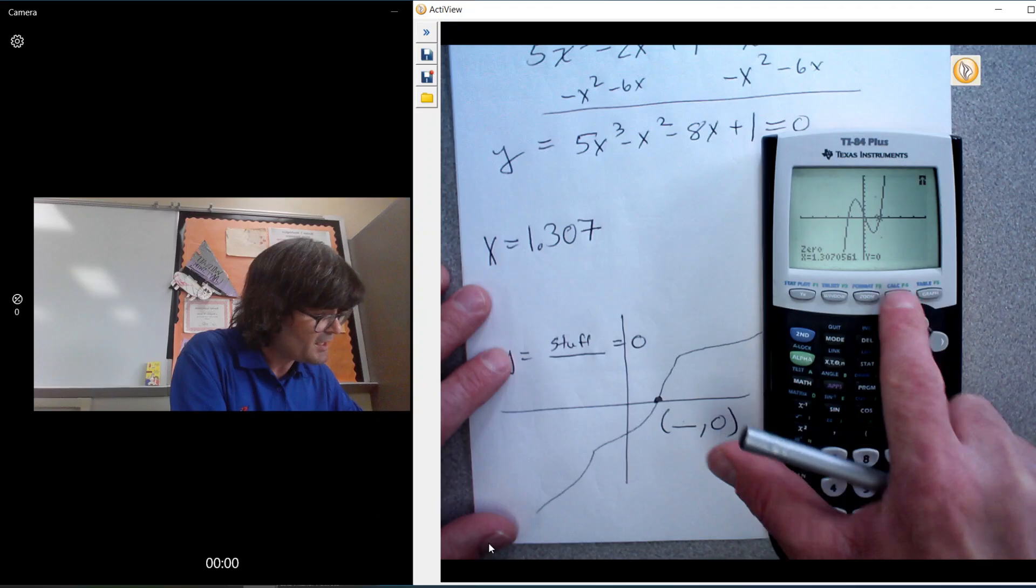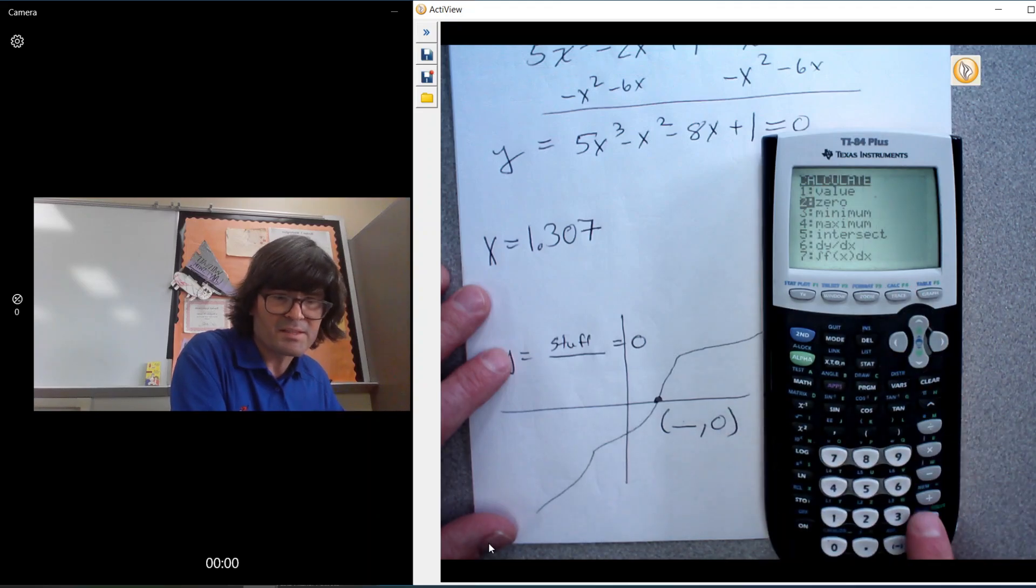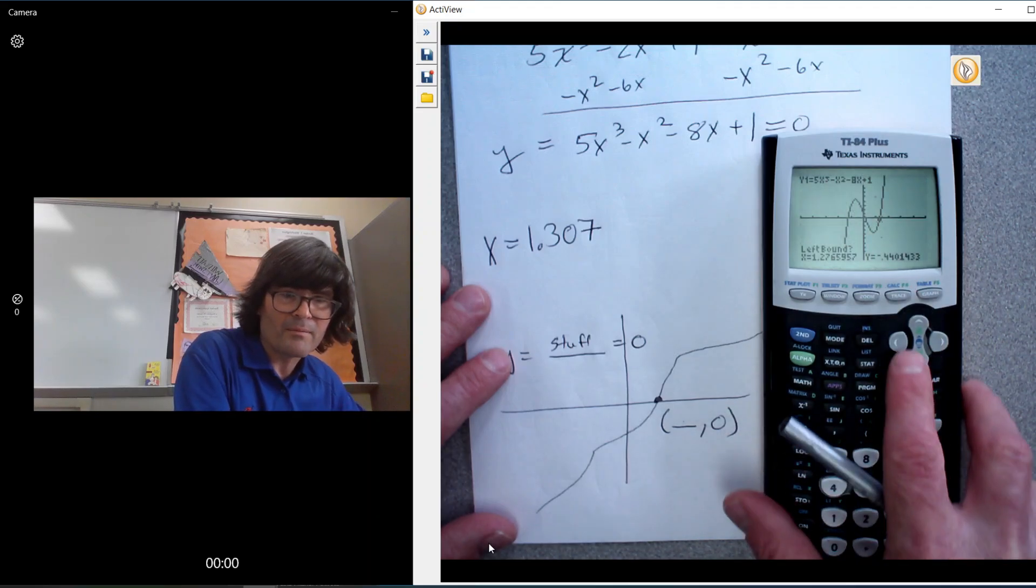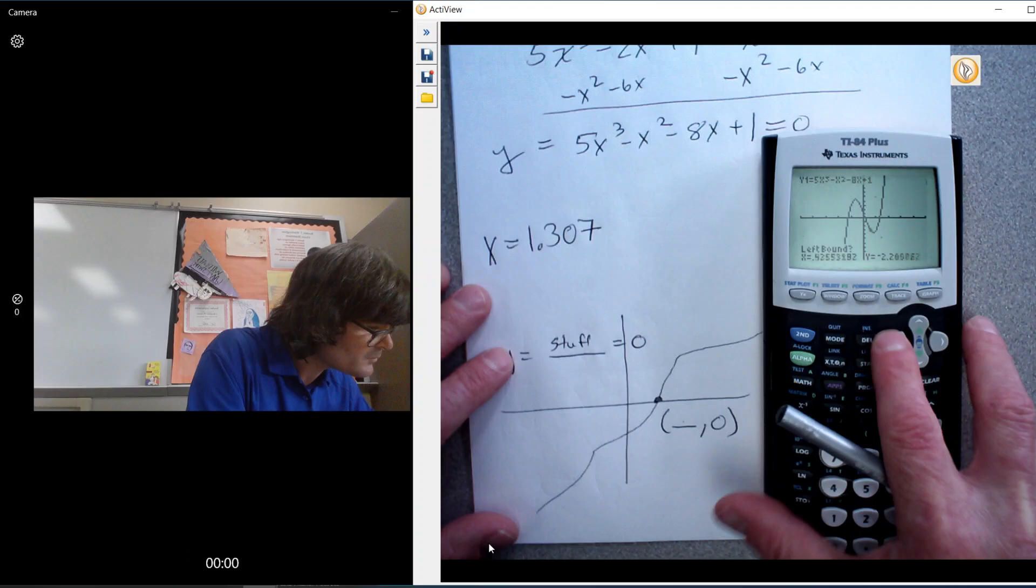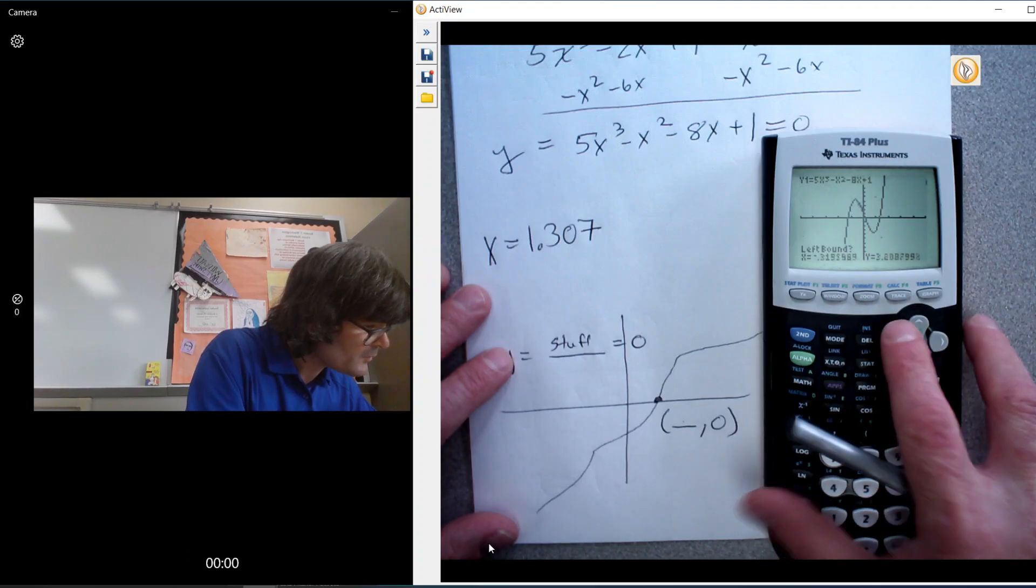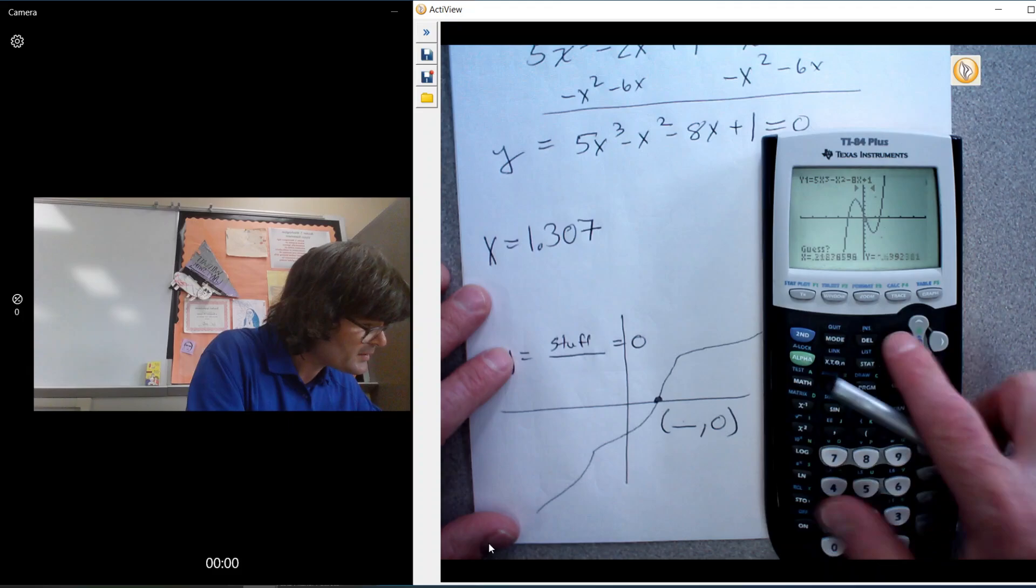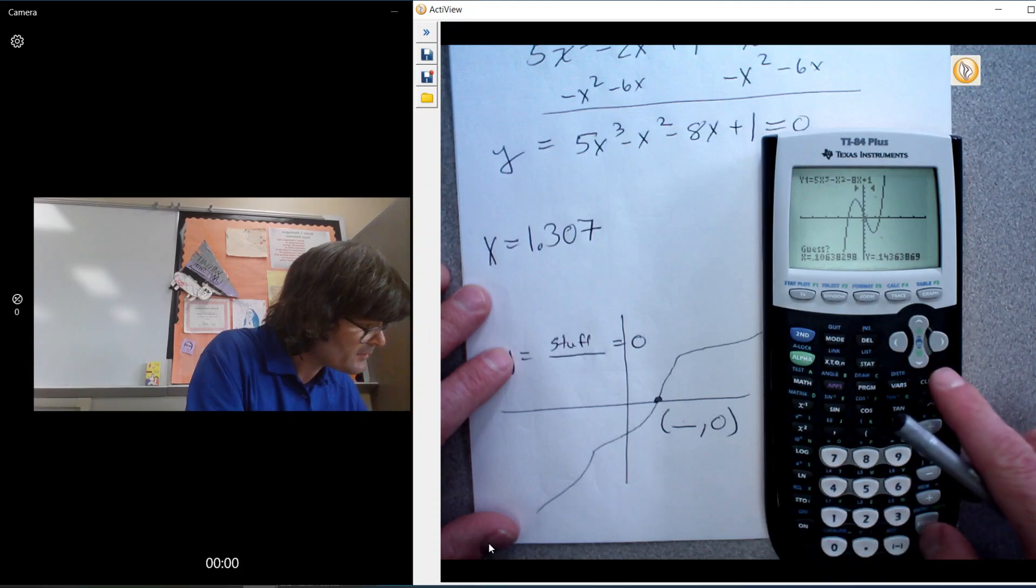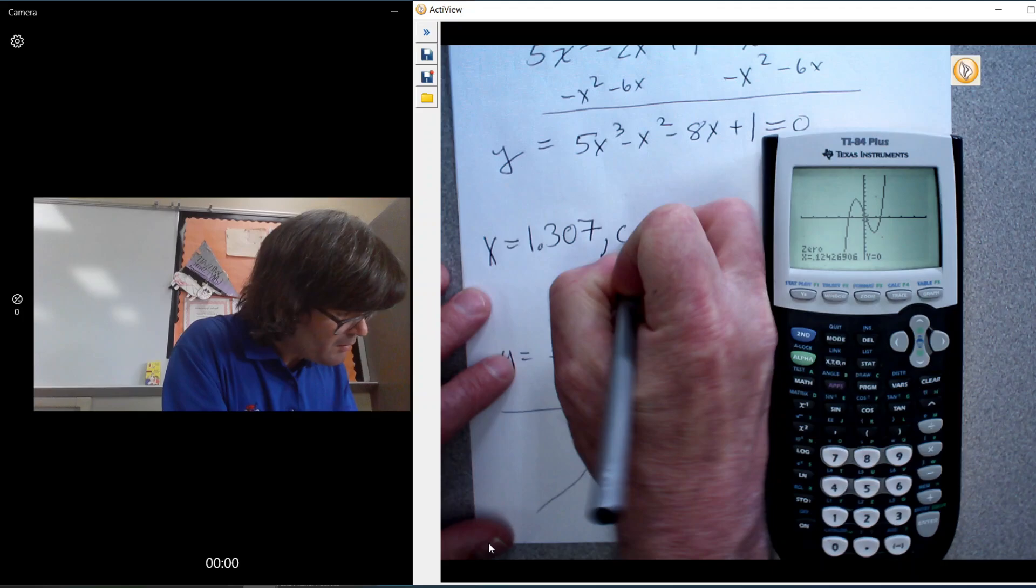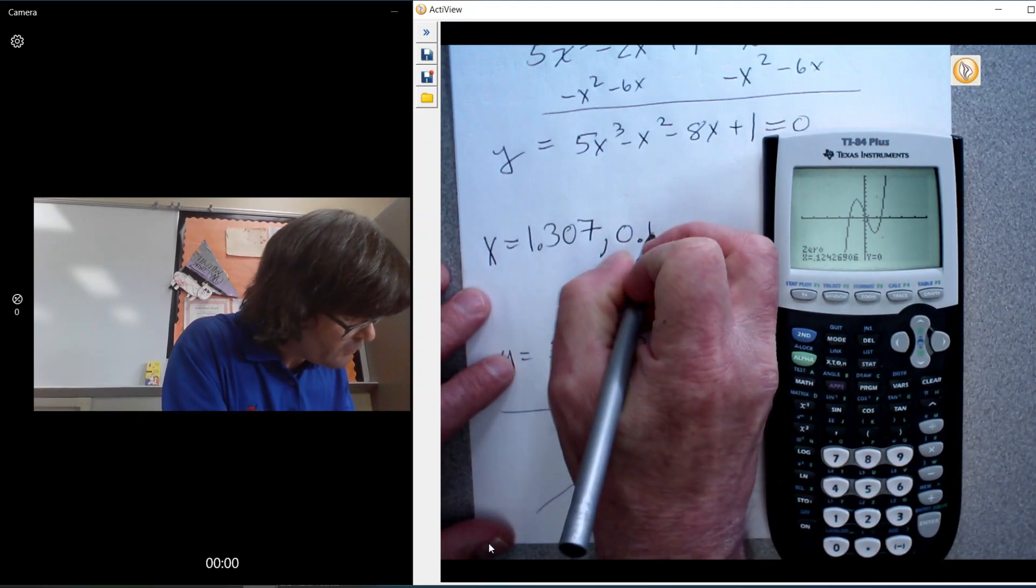So save that for later. Let's do this one. Again, second calc, go to the zero, and then left bound there, right bound is there, and then guess. And then we have 0.124.